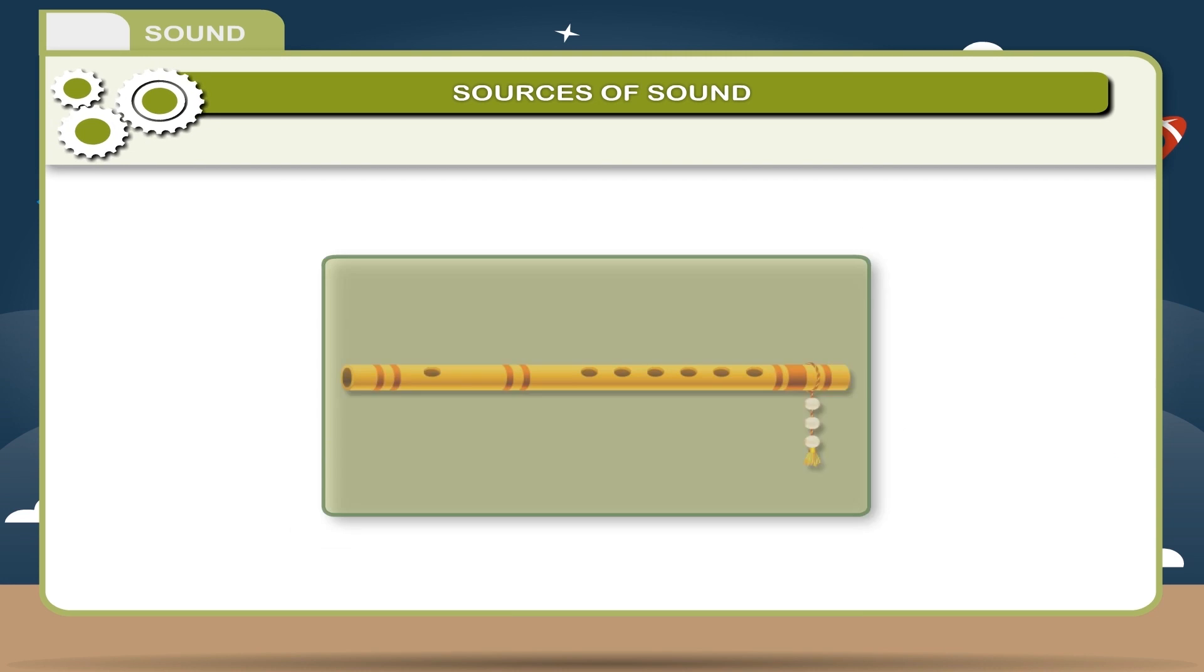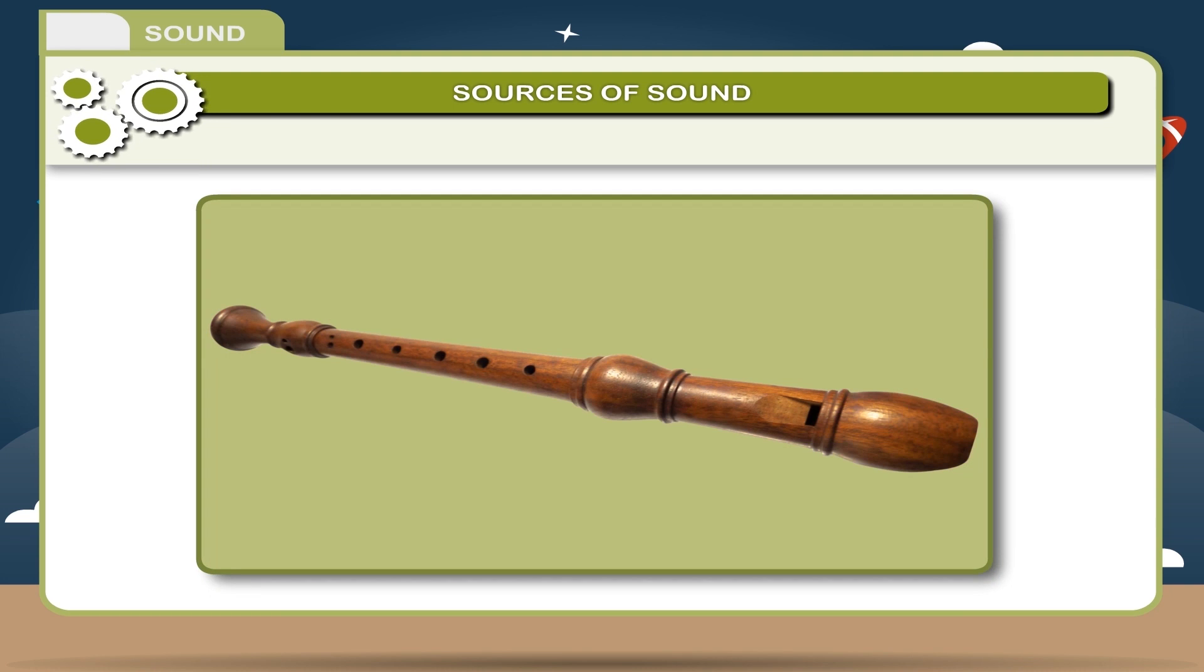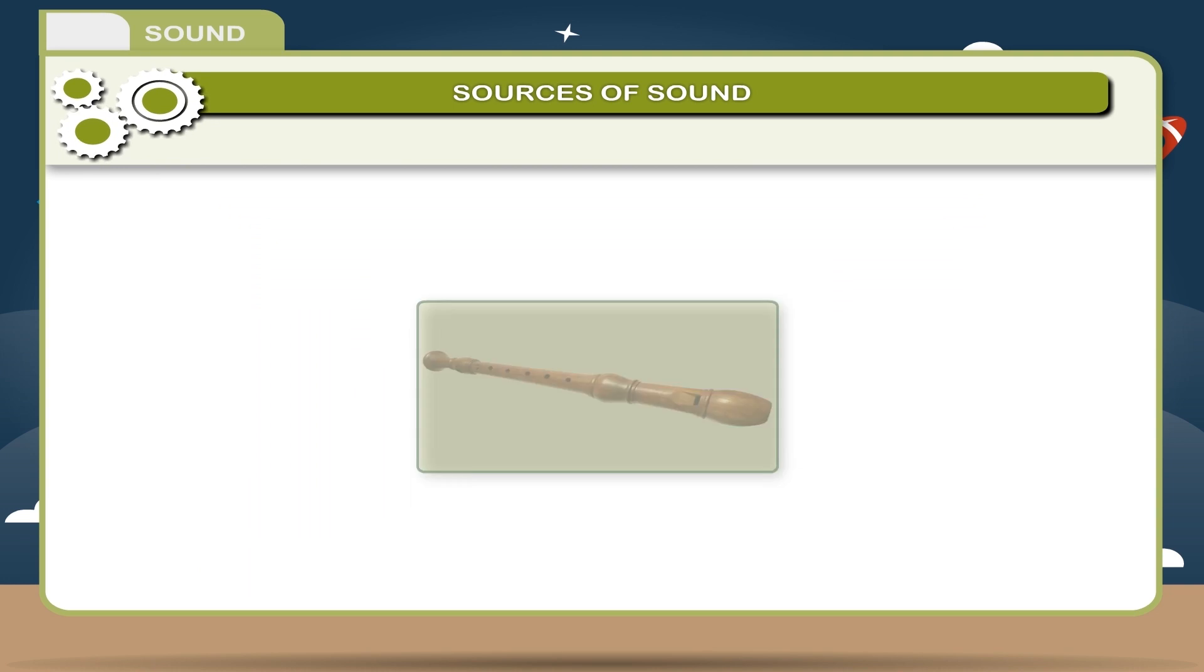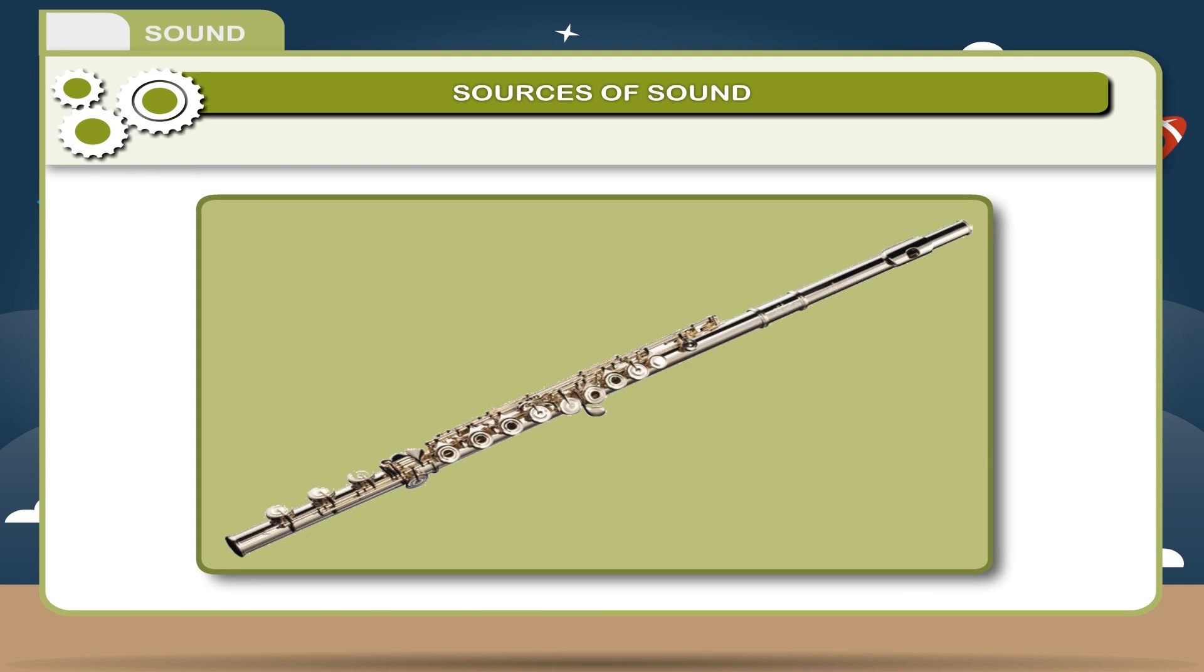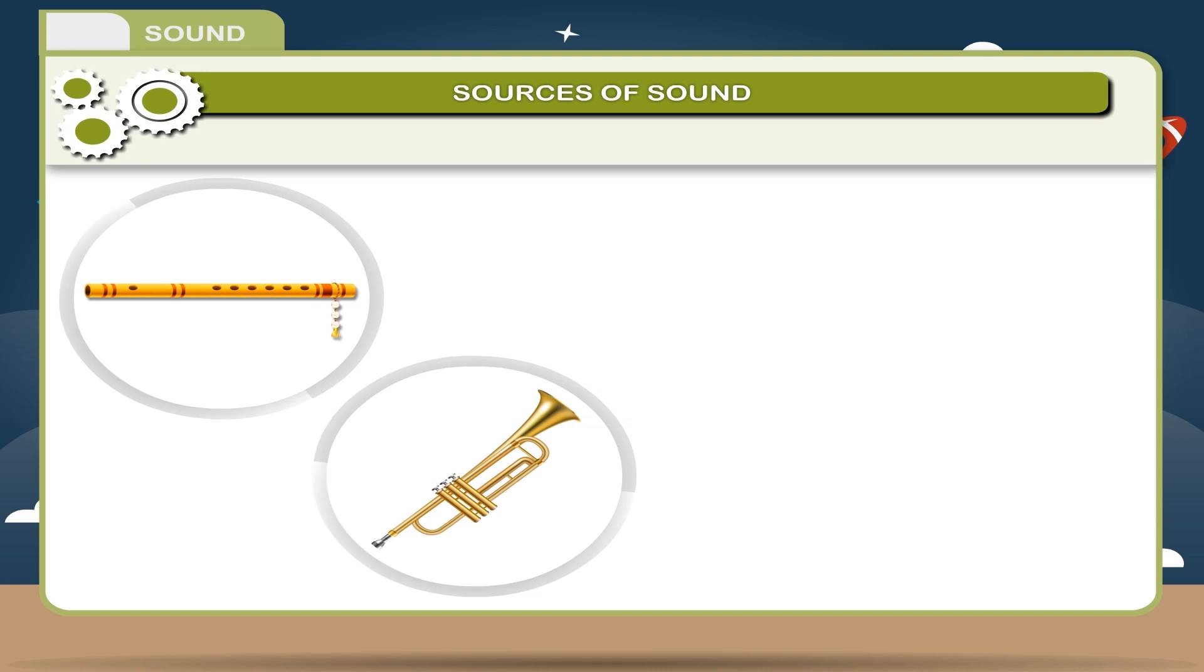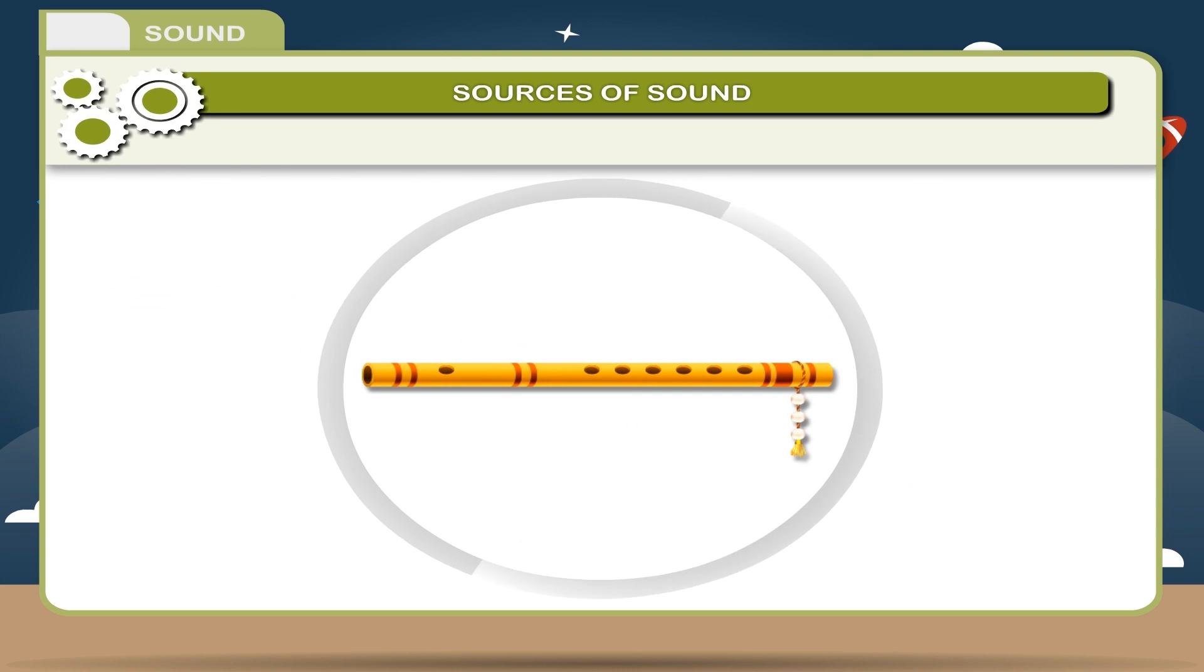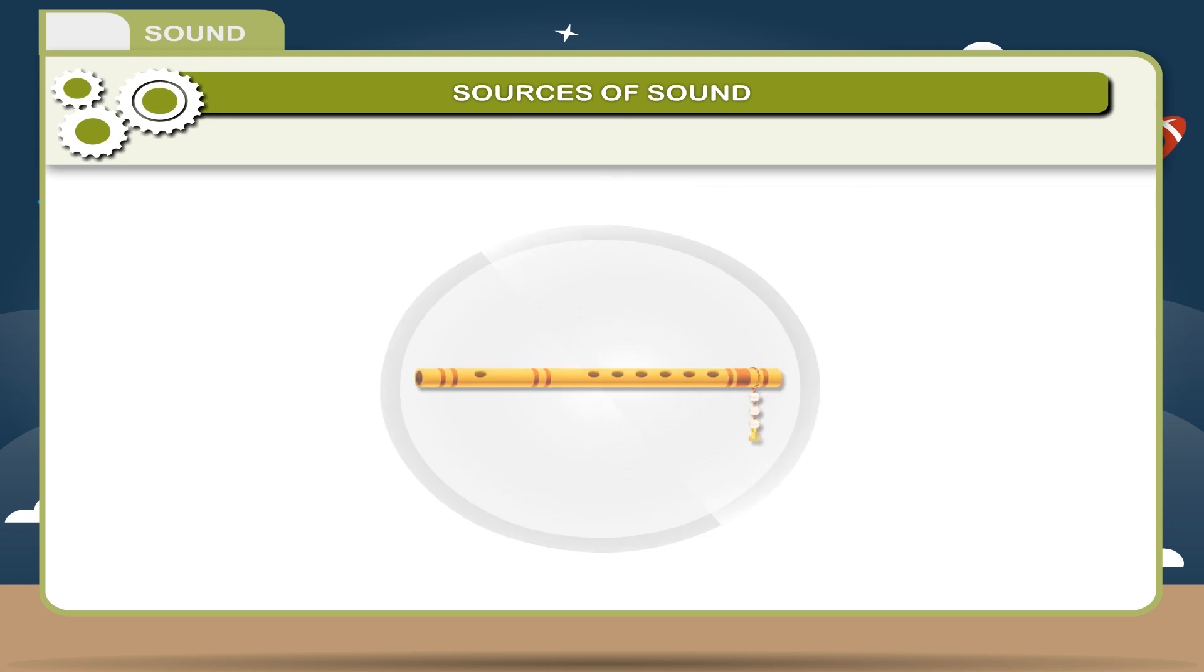Wind Instruments. These instruments have pipe-like structure having holes at a certain distance. The air column inside the pipe is vibrated when it is blown from one end. In this way, the vibrations are produced and a sound is heard. Examples: flute, trumpet, shahnai, clarinet. Sound produced by a flute is produced by the vibration of air enclosed in the flute tube.